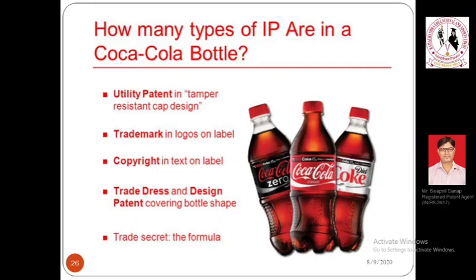Trade dress or design patent covers the shape of the Coca-Cola bottle — you can see small bubbles at the bottom and a curved portion. The bottle is curved to help you grip it properly. This is categorized under design patent. The specific shape of the bottle is distinguishable from any other bottle — Bisleri, Kinley, or Aquafina — and if you place them side by side you can easily differentiate the Coca-Cola bottle. This is the importance of trade dress or design.